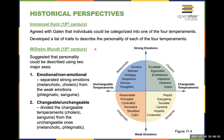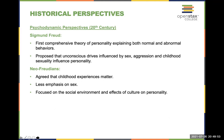Wundt's two axes were: non-emotional versus emotional, and unchangeable versus changeable. On the diagram, strong emotions appear at the top, weak at the bottom, with the four temperaments mapped into quadrants based on where they fall along these two dimensions.